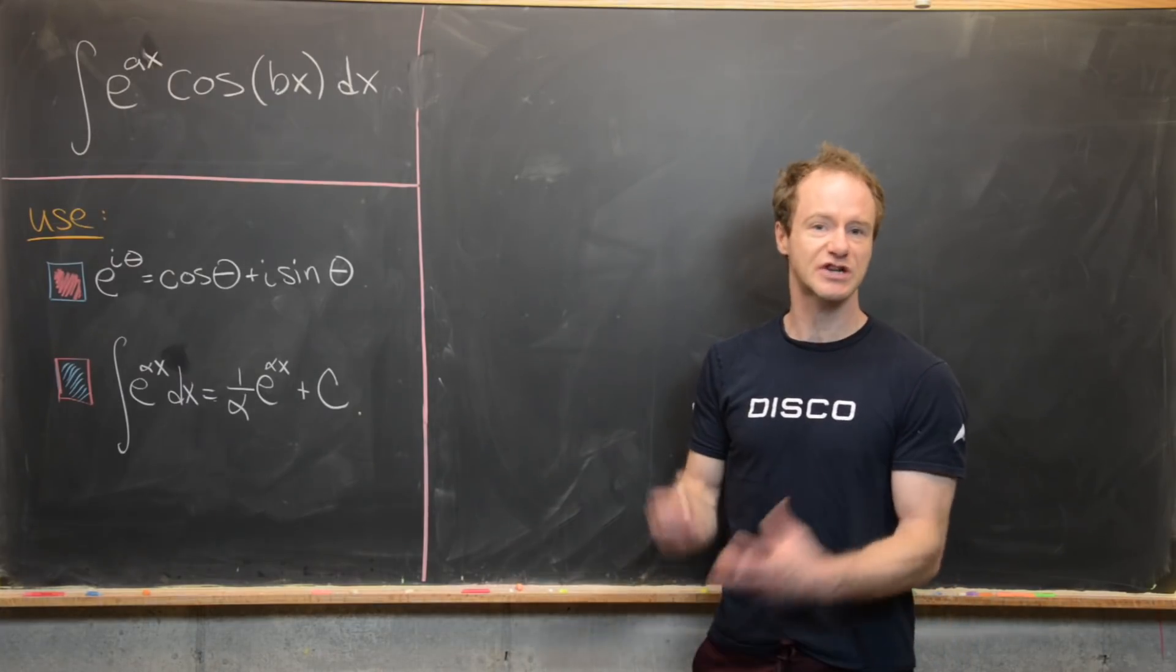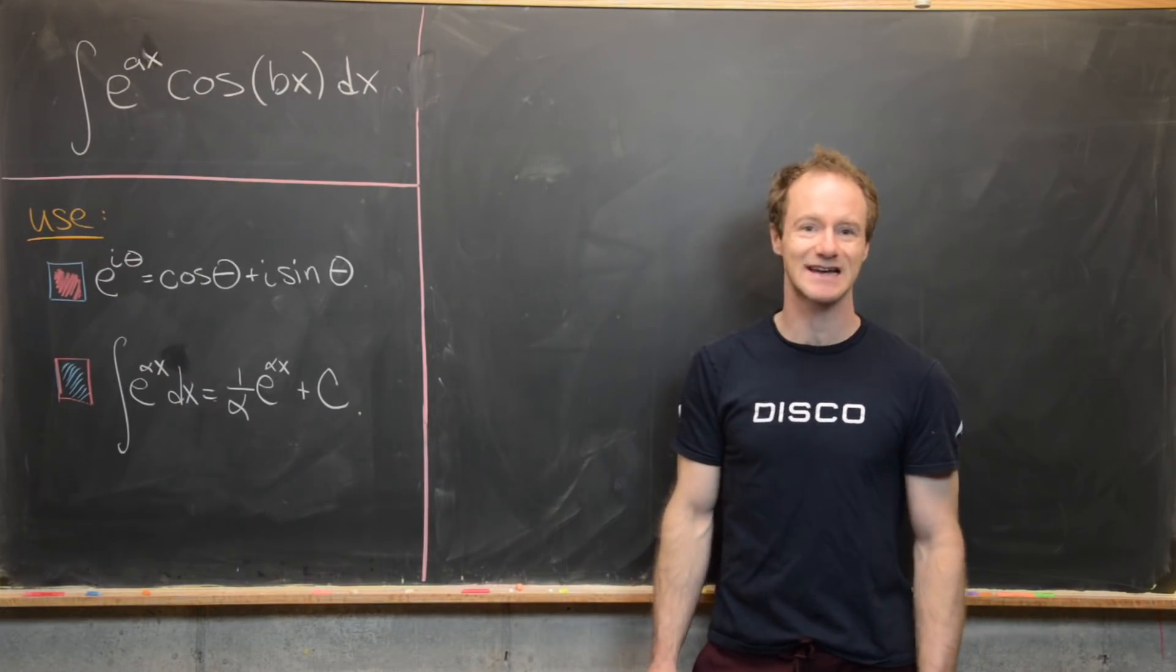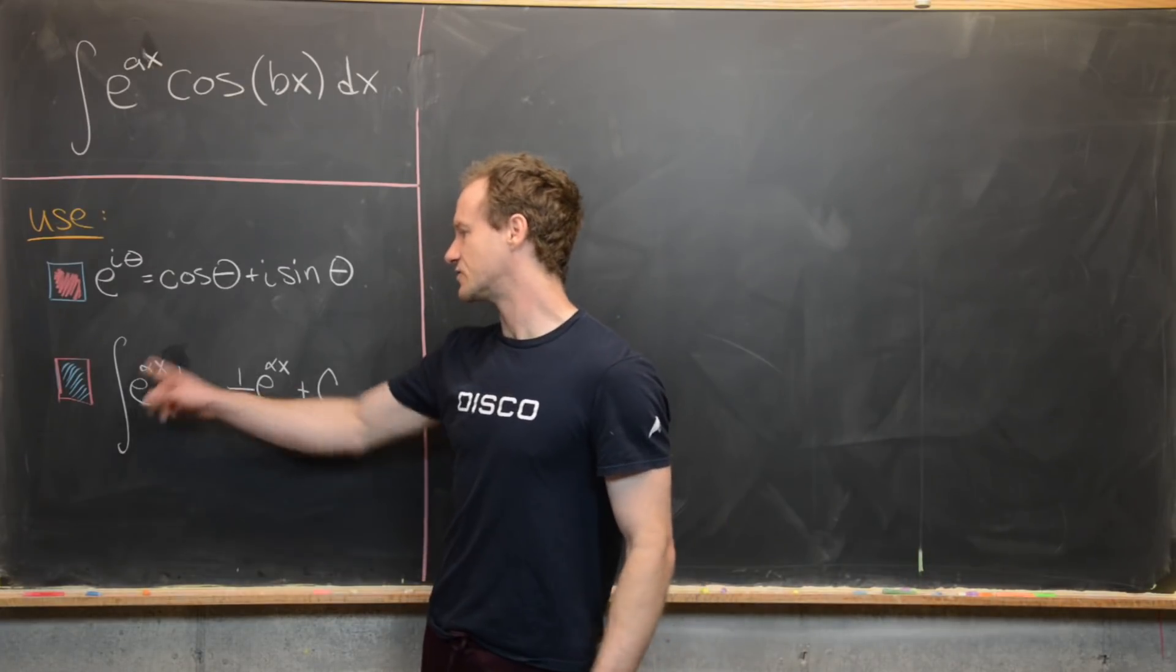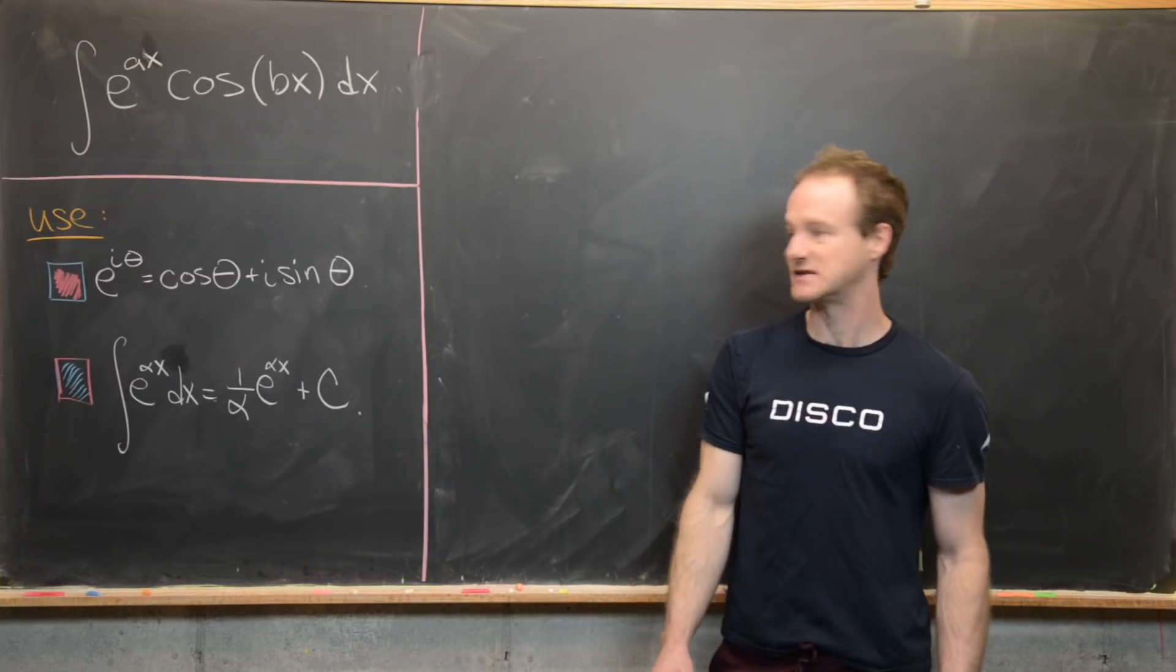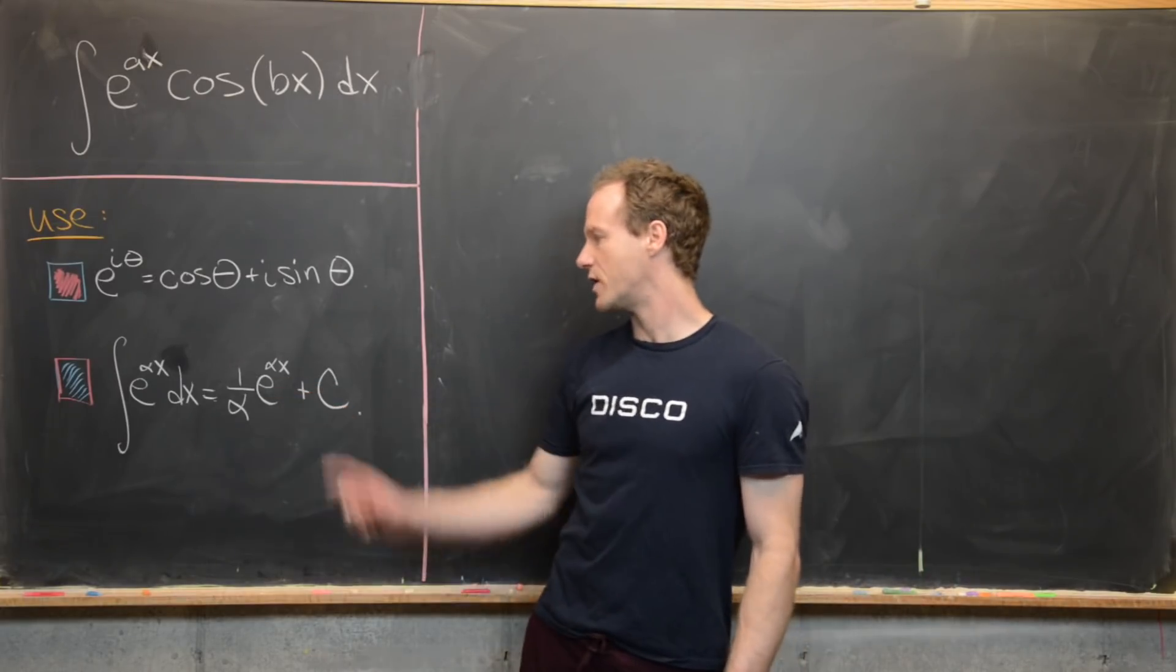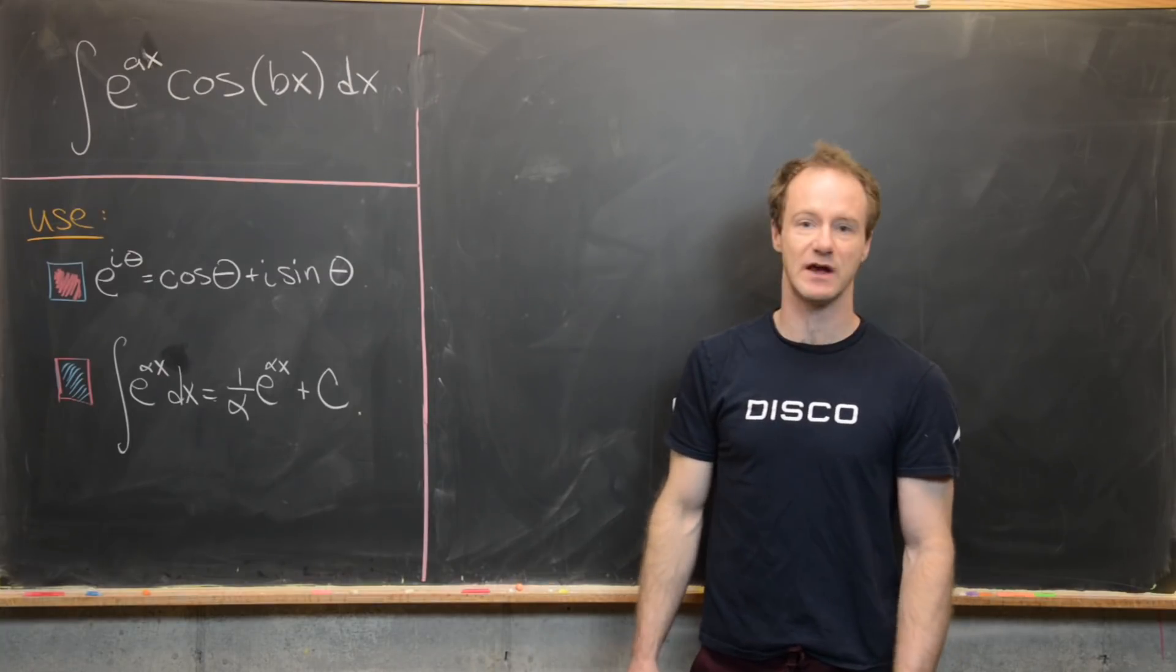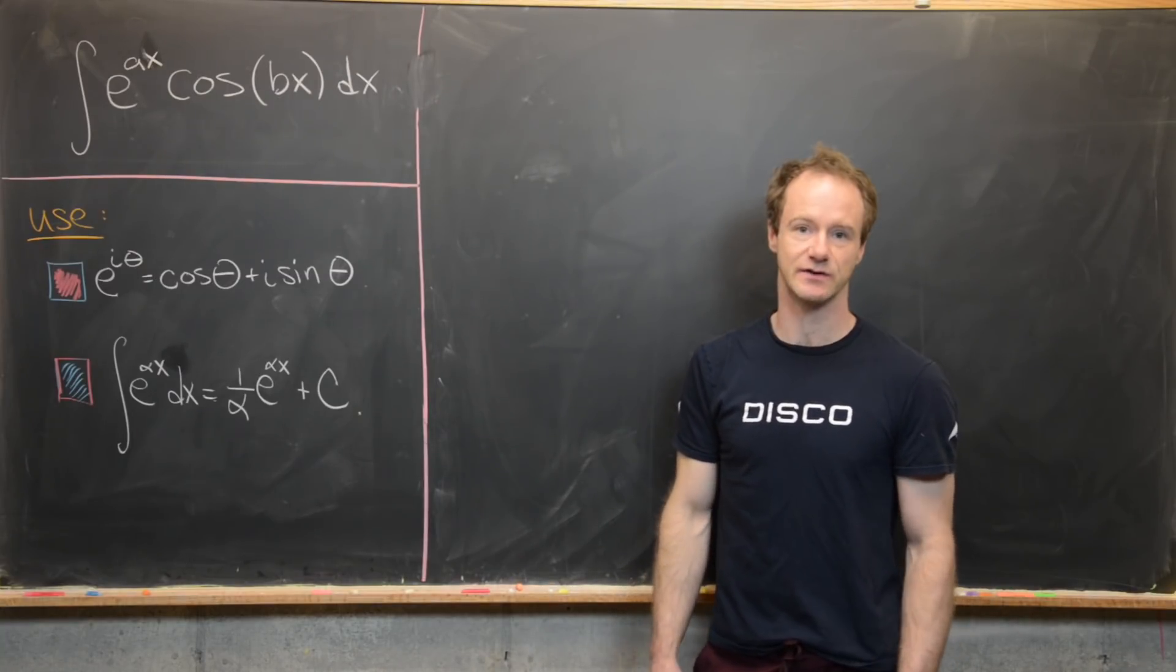And another one, which comes from calculus 2, is just the antiderivative of an exponential function. The antiderivative of e^(αx)dx is equal to (1/α)e^(αx), of course plus a constant, because we have an indefinite integral or an antiderivative.